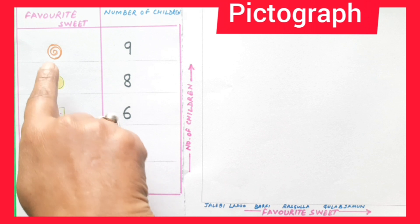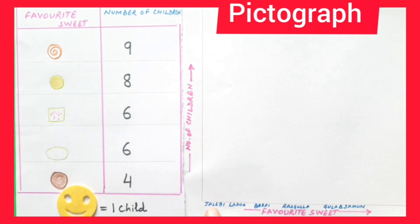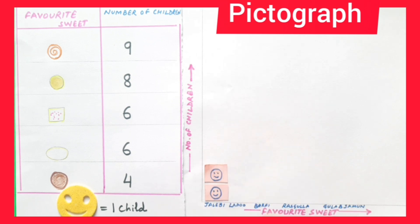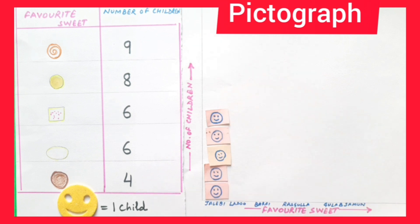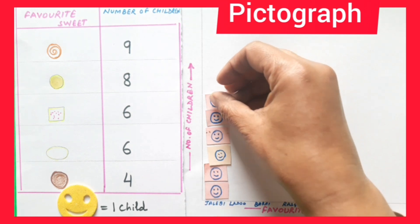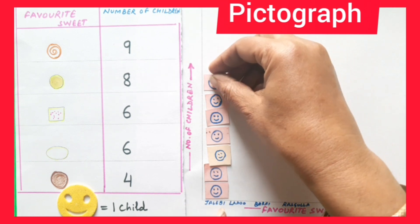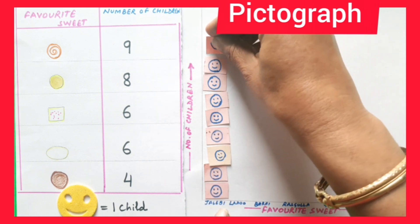Now, children, the number of children liking jalebi are nine. So, jalebi will be represented by nine smileys in the vertical form. Let's see: one, two, three, four, five, six, seven, eight, nine.